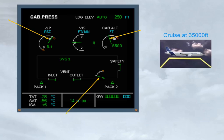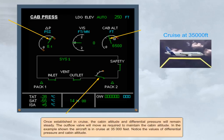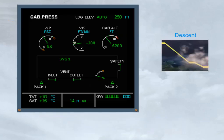In the example shown, the aircraft is in cruise at 35,000 feet. Notice the values of differential pressure and cabin altitude. During the descent phase, the pressure rate is optimized so that the cabin reaches landing field pressure just prior to landing. For passenger comfort, the automatic function will limit the rate of cabin descent to a maximum of approximately 750 feet per minute.